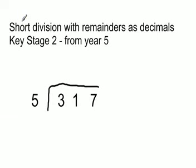A way to represent a remainder is to use a decimal, so we do our division in exactly the same way we have with the others. How many fives going into three? Zero. How many fives in 31? Six with one.